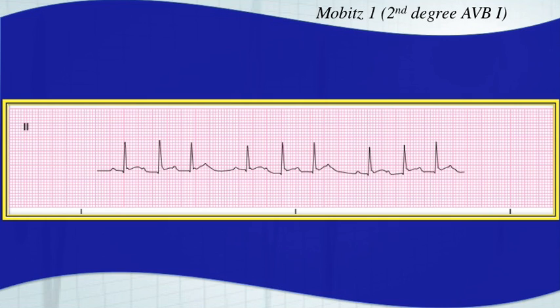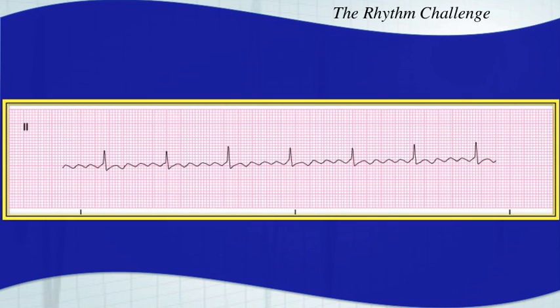This one looks a little bit more straightforward. This is atrial flutter — a 5-to-1, much easier to identify than those 2-to-1s.